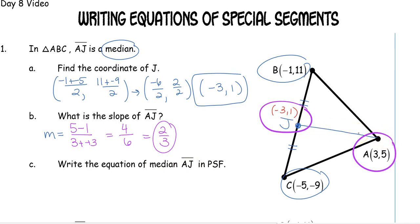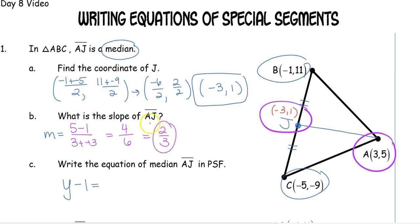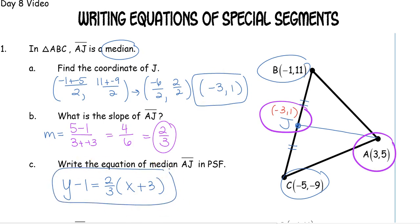We want to write the equation of median AJ in point-slope form. We need a point on the line and the slope. We have both A and J as points — I'll use J. So we write: Y minus 1 equals 2 thirds times (X minus negative 3), which means adding 3. That's the equation of the median of the triangle.